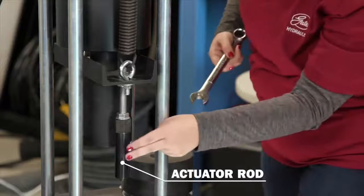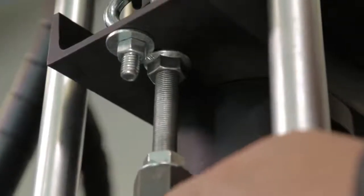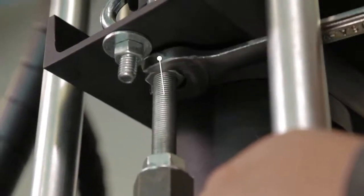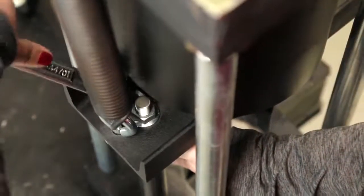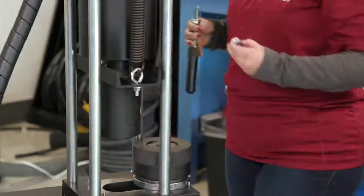Next, you'll remove the actuator rod by unbolting it from the channel. There are several ways to remove, but we recommend loosening the nut on the bottom of the channel, likely using a three quarter inch wrench. Once loosened, you'll unscrew the nut on the top of the channel to finish unbolting it.